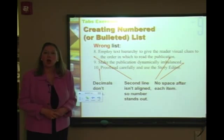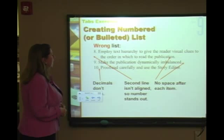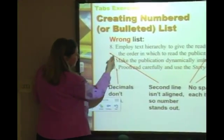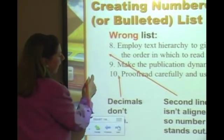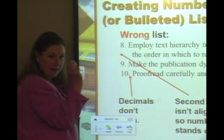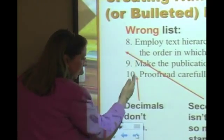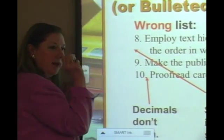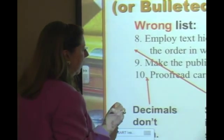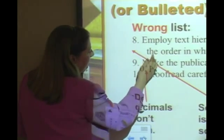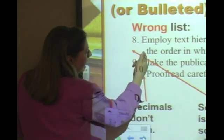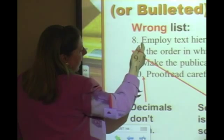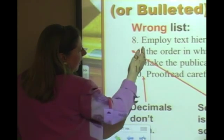The second element of a proper list: on the second line of text, the copy aligns with where the first text started, not with the number. And finally, there's a little bit of space after each item. Let's look at what a wrong list looks like — the one is aligning with the nine, and to fix that you need a decimal tab in front of each number.